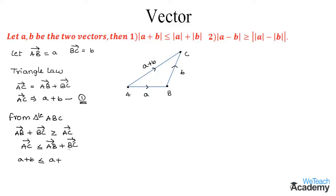Since these are lengths of a triangle, they cannot be negative. So let us apply the modulus symbol on both sides. We get |a + b| ≤ |a| + |b|. This is equation two, and we have proved the first condition. Now let us prove the second condition.